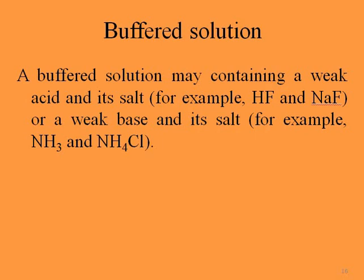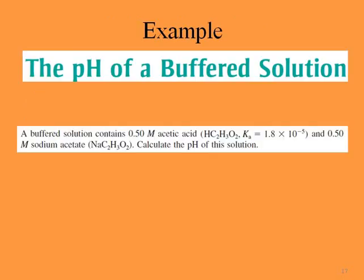A buffered solution contains a weak acid and its salt — for example HF and NaF — or a weak base and its salt — for example ammonia and ammonium chloride. Let's see an example: we need to find the pH of a buffered solution containing 0.5 molar acetic acid with Ka = 1.8 × 10⁻⁵ and 0.5 molar sodium acetate.